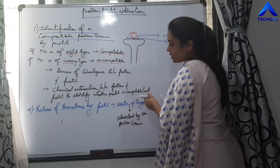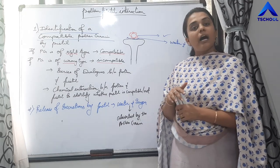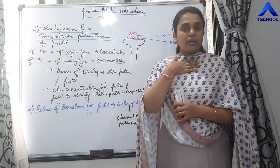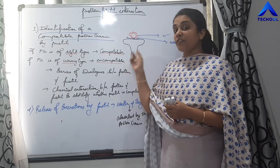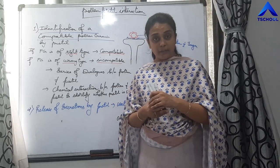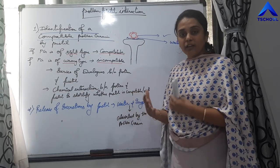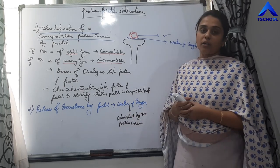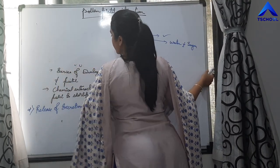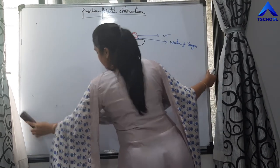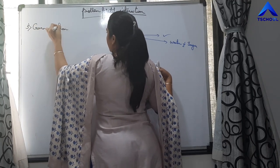So the first step is identification of a compatible pollen grain — it should be of the same species, and if the plant is self-incompatible, even pollen from the same plant is not allowed. The second step is release of secretions — water and sugar — by the pistil, which are absorbed by the pollen grain. The third step is germination of the pollen grain.